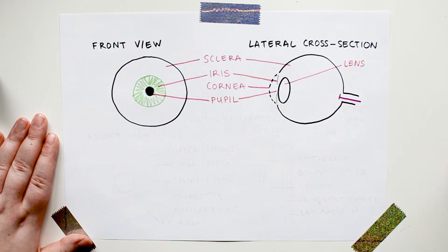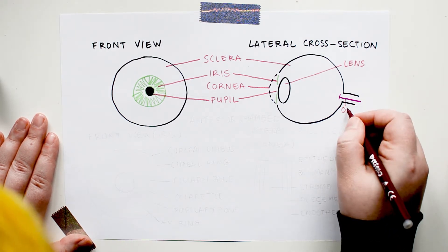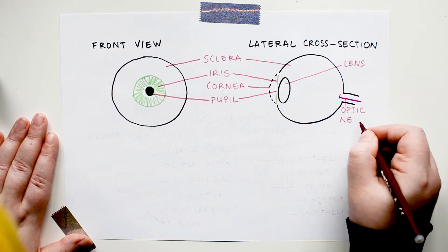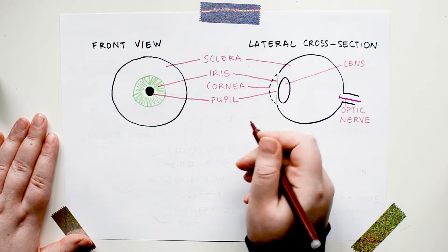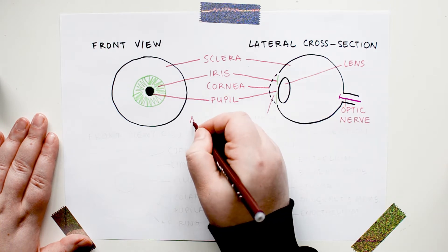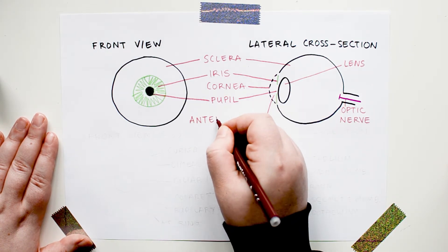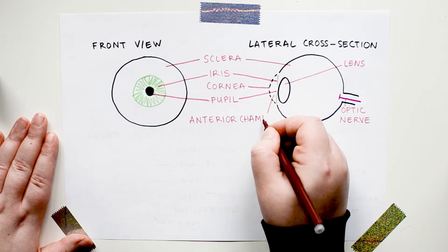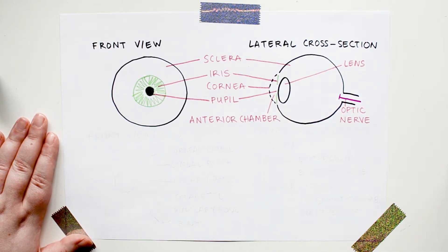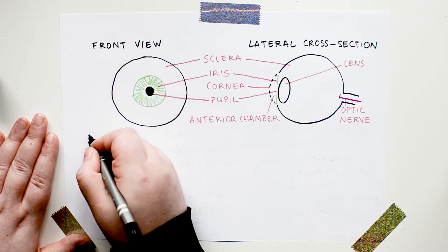And then some more stuff happens until the light signals are sent to the brain through the optic nerve, which is all the way back here, but we don't need to worry about all that right now. Anyways, back to the front of the eye. The space between the cornea and the iris is called the anterior chamber, and it is filled with a liquid called the aqueous humor.